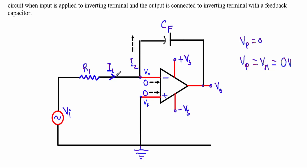We have two current components: I1, the current flowing through R1, and I2, the current flowing through the feedback capacitor CF. If we apply Kirchhoff's current law at the inverting terminal, we have three current components — I1 as the incoming current, and I2 and the terminal current of zero amperes as outgoing currents.